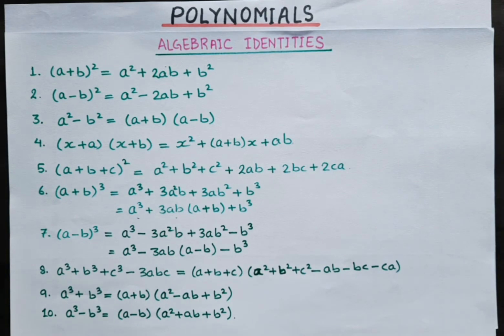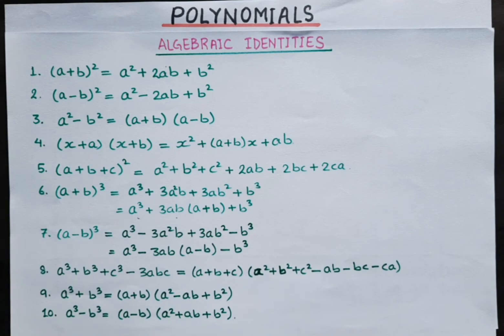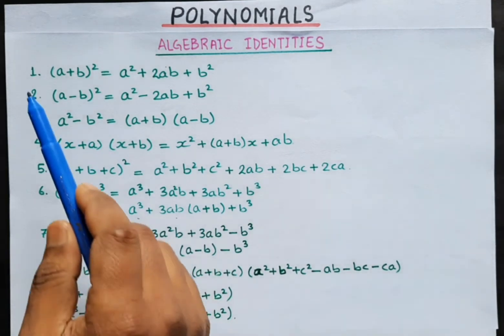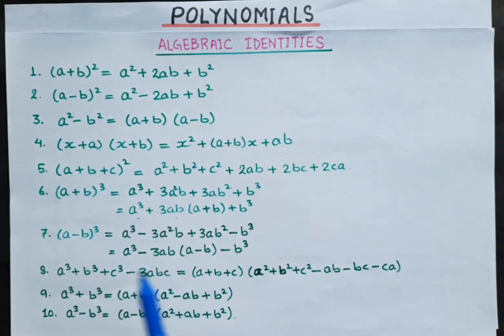We have 10 algebraic identities, which we have as special products and sometimes as algebraic formulas. So, we have 10 identities.